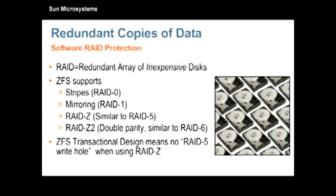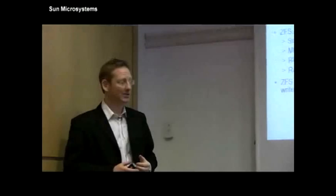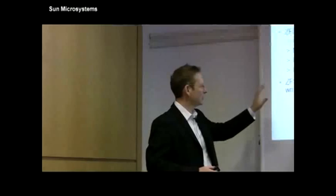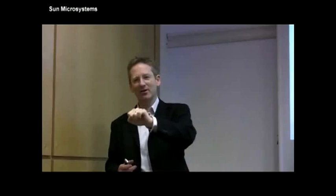So what does ZFS support in the software RAID levels? RAID 0 striping, which actually gives you no redundancy at all. It's just a way of putting a whole bunch of disks together for performance reasons. Mirroring, RAID Z, which is very similar to RAID 5, and RAID Z2, which is double parity RAID, very like RAID 6. Software RAID 5, which is what we're doing here with RAID Z, software RAID 5 really is not widely used.